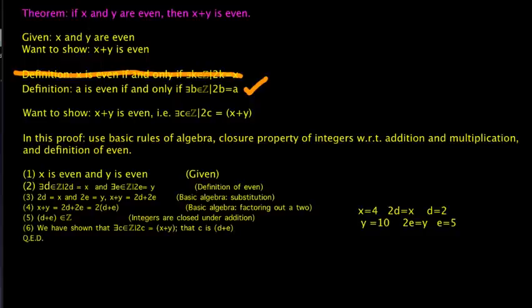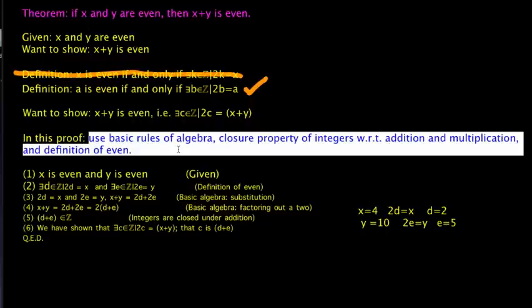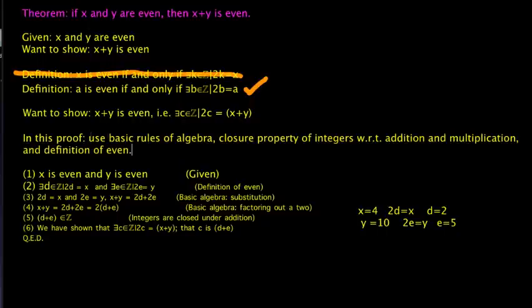The idea here is that at every step, we need to be able to justify how we got from the previous step to the next, using only what we were given to work with — in this case, basic rules of algebra, the closure property of integers with respect to addition and multiplication, and the definition of even. That is how we do a simple proof. I hope this was helpful, and thanks for watching.